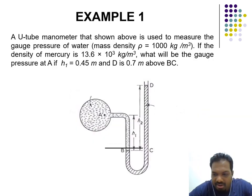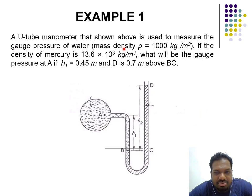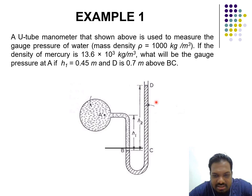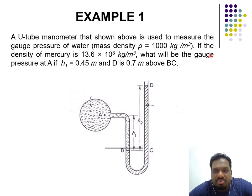Here is an example using the U-tube manometer shown above, which is used to measure the gauge pressure of water. We have two materials: water (fluid P) and mercury (fluid Q) with density 13.6 × 10³ kg/m³. The heights H1 is 2.5 and HD is 0.7. We are asked to find the gauge pressure at point A.